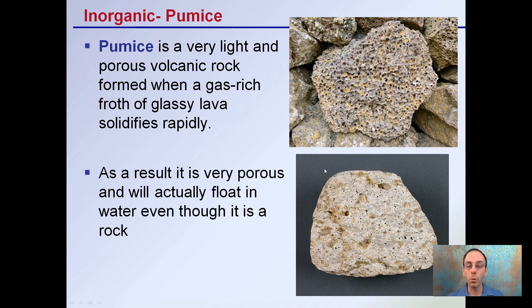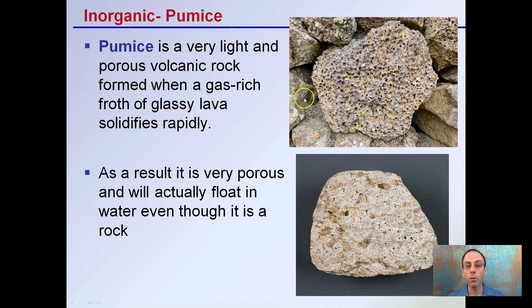Pumice is a very light and porous volcanic rock. It's formed when gas-rich, frothy glassy lava solidifies rapidly — it's that expanded volcanic rock. As a result, it is very porous and will actually float in water, even though it is a rock. It's very light — something you may have seen with grills, for example. Pumice can be involved there due to its rock-like structure, but it's extremely lightweight simply because of the amount of porosity and air pockets it has.